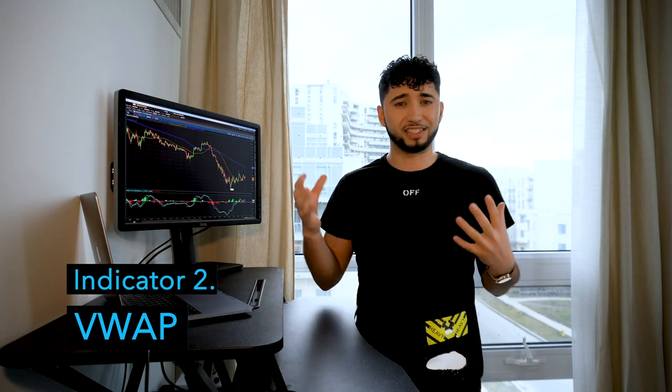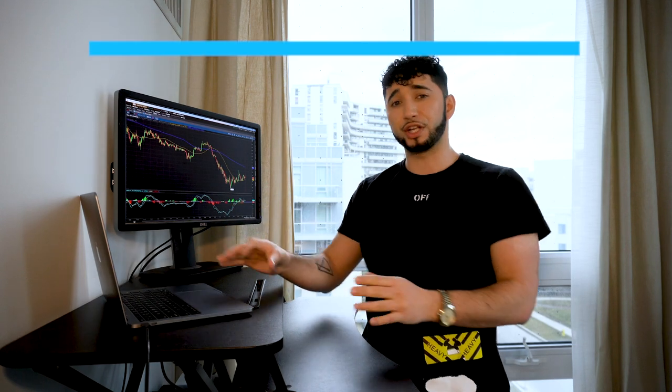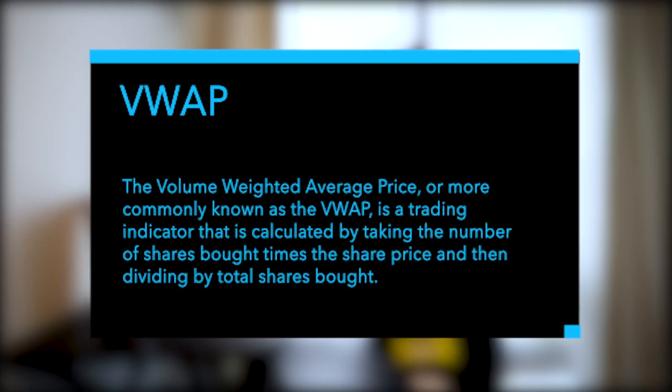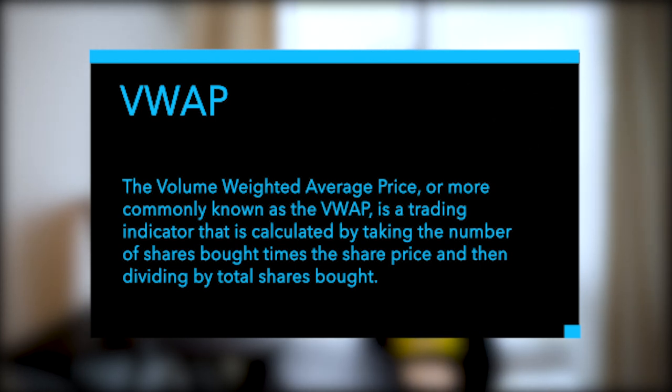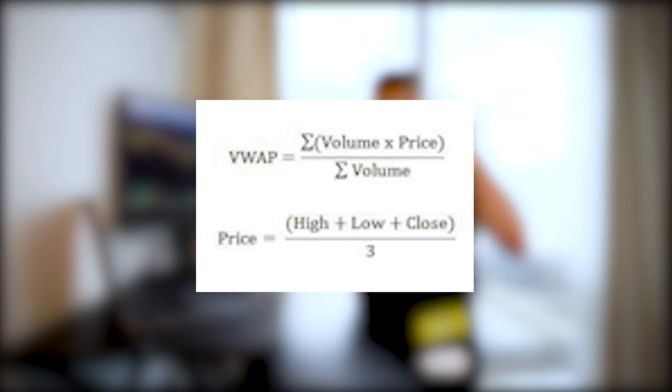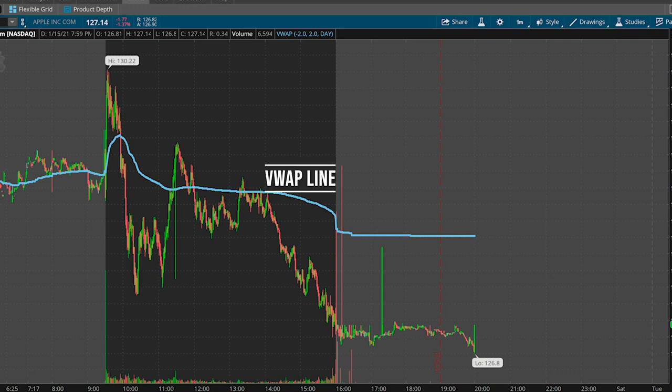The next swing trading indicator we're going to go over is VWAP. This is typically used for day trading, but I still use it regularly to swing trade as well. The volume weighted average price, or VWAP, is calculated by taking the number of shares bought times the share price and then dividing by total shares bought. Basically, it shows the average price of a stock based on the volume traded at one specific price, and it's usually calculated within a one-day timeframe. It displays on your chart and looks similar to a moving average, although it's a much slower and more lagging indicator than, say, the 8 EMA or 20-day EMA.